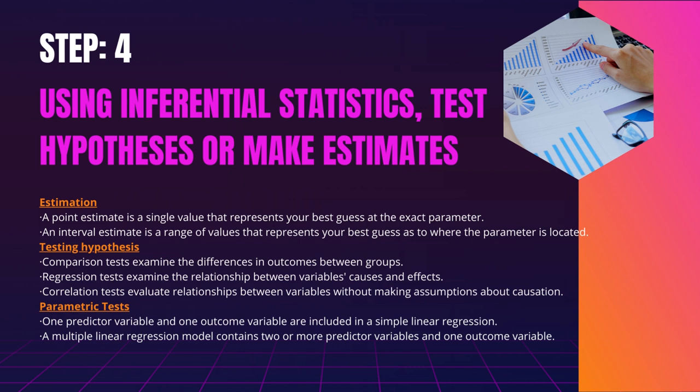Estimation. Estimates of population parameters can be made in two ways using sample statistics: 1. A point estimate is a single value that represents your best guess at the exact parameter. 2. An interval estimate is a range of values that represents your best guess as to where the parameter is located. If your goal is to infer and report population characteristics from sample data, your paper should include both point and interval estimates. When you have a representative sample, you can consider a sample statistic to be a point estimate for the population parameter, e.g., in a wide public opinion poll, the proportion of a sample that supports the current government is taken as the population proportion of government supporters. Because there is always some degree of error in estimation, you should also provide a confidence interval as an interval estimate to demonstrate the variability around a point estimate.